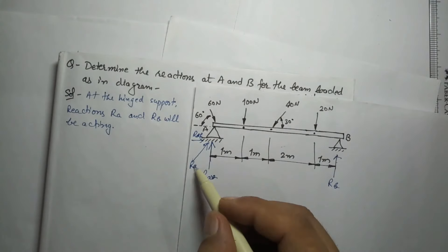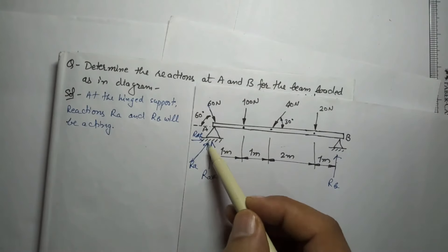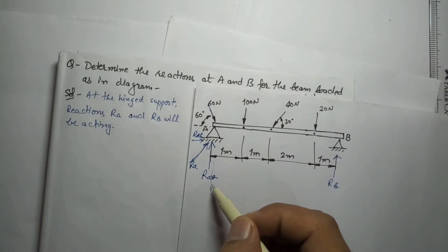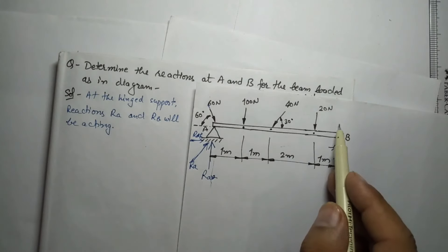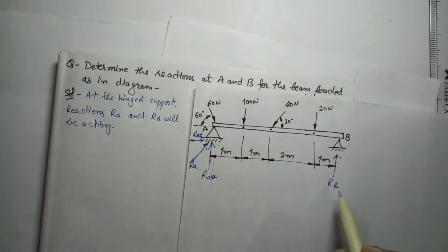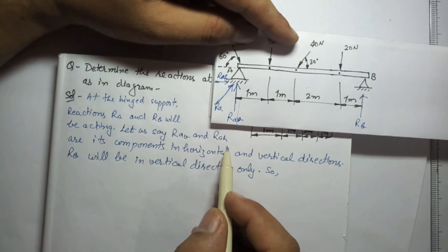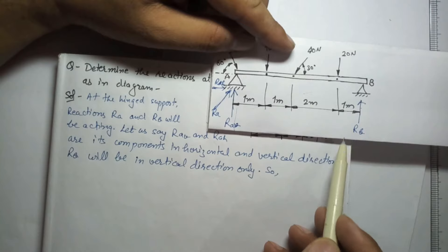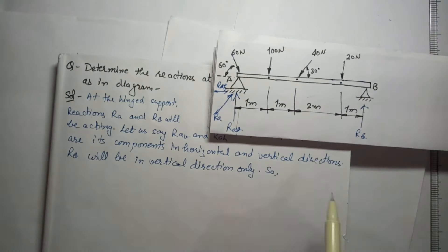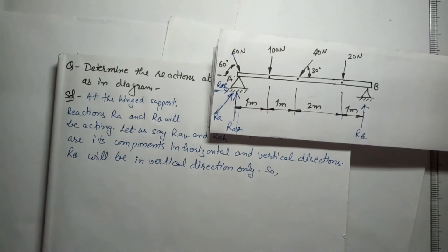At point A, because the force is inclined, there will be an inclined reaction having two components: the vertical component of reaction at A and the horizontal component of reaction at A. At point B, no force is acting, so Rb will be only vertical. So we have Rav and Rah as the horizontal and vertical components of reaction at A, and Rb as only the vertical reaction at B. We can now solve this using equilibrium conditions.